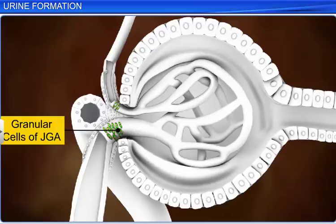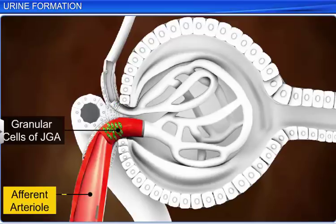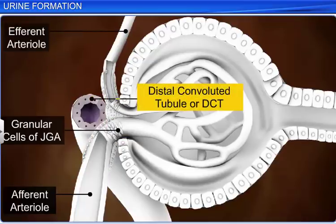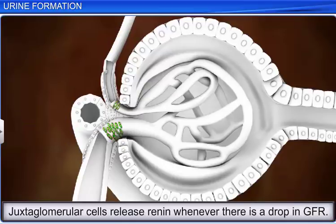The JGA is formed by cellular modifications between the afferent, and to some extent the afferent arteriole, and the distal convoluted tubule or DCT of the same nephron, at their point of contact. The juxtaglomerular cells release renin whenever there is a drop in the GFR, which stimulates glomerular blood flow and normalizes the GFR.